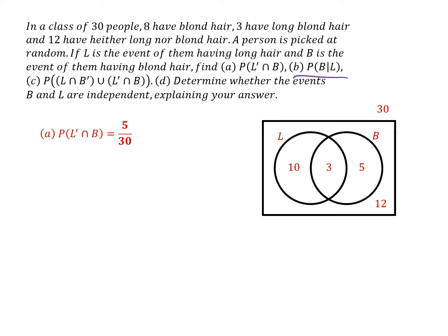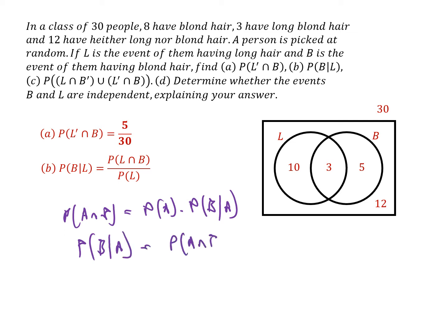Part (b): blonde given long. To find the probability of blonde given long, we use an adaptation of the formula in the formula book. The formula says P(A ∩ B) = P(A) × P(B|A). Rearranging by dividing by P(A) gives P(B|A) = P(A ∩ B) / P(A).